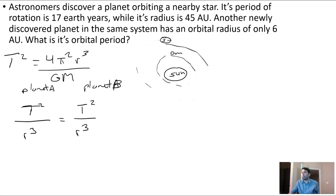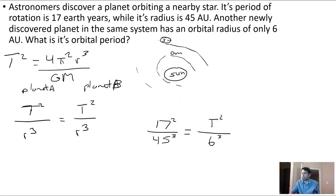So we have this planet with a period of 17 Earth years, so our time is in Earth years. That must equal the other planet's ratio. Another newly discovered planet in the same system has an orbital radius of only 6 AU, and we're looking for its period. The numbers are squared on top: T² over r³. Big G and big M come from the star — big G is the gravitational constant, big M is the mass of the star, and pi is a constant.